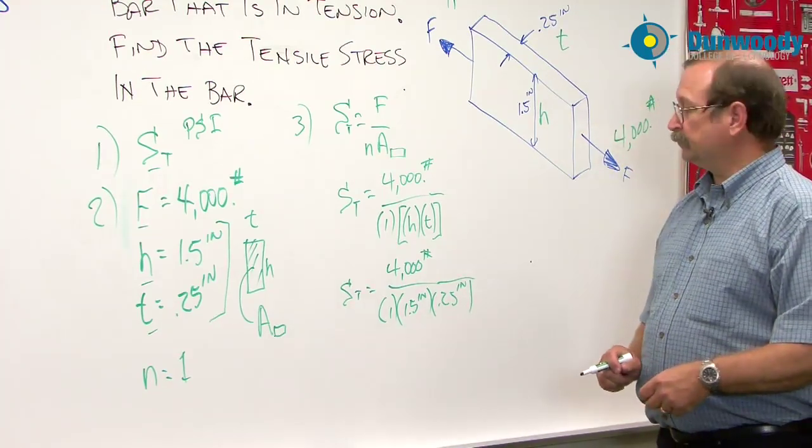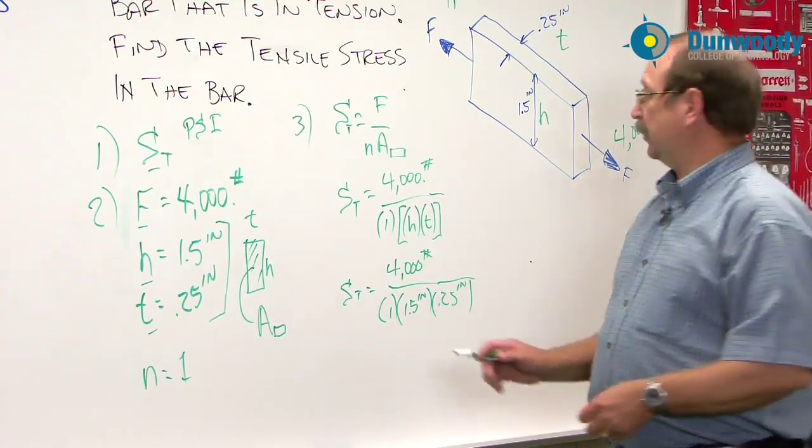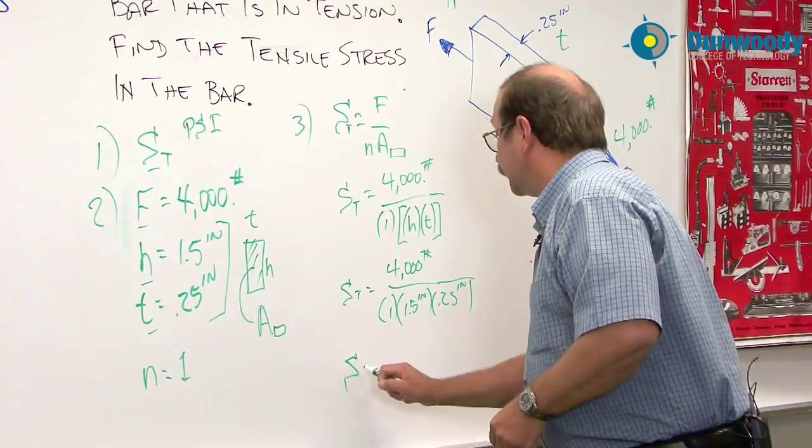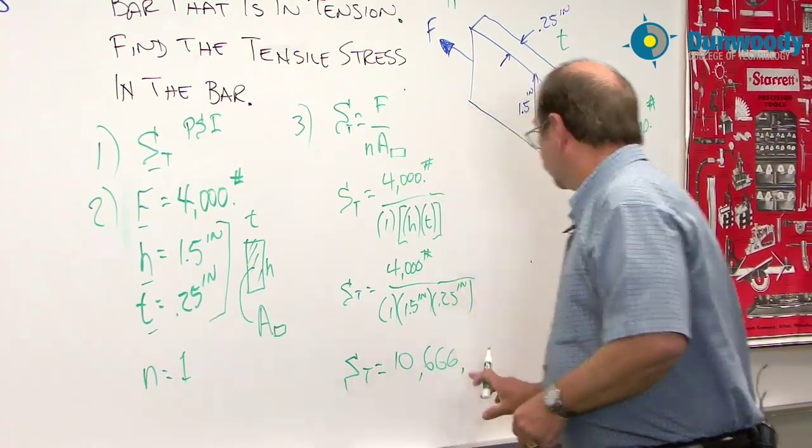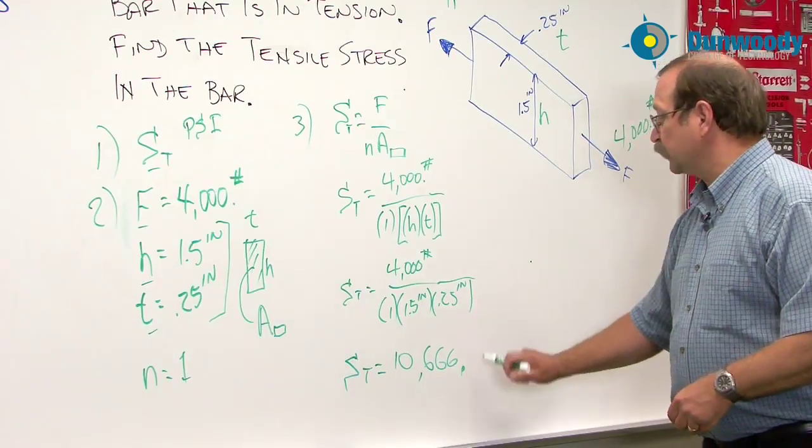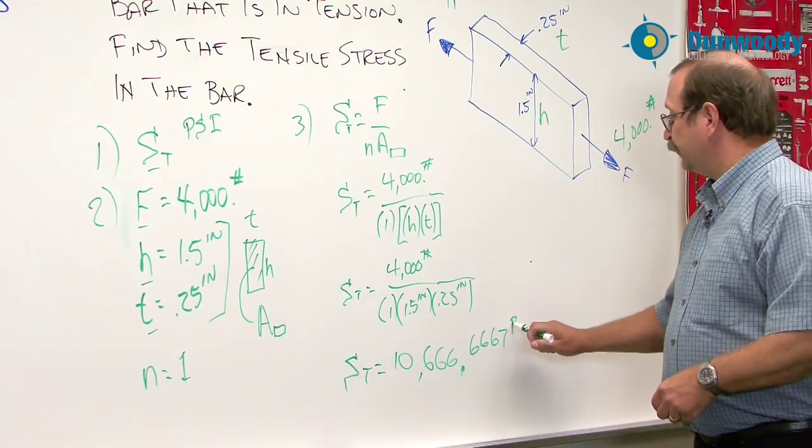We can come in here and add in the variables below. So we've got 4,000 pounds divided by 1 times 1.5 inches times 0.25 inches. That's our formula. From here, we can crunch out our numbers on the calculator.